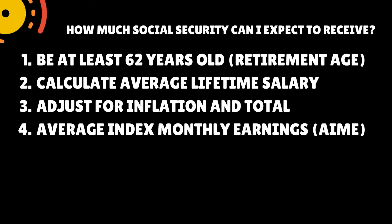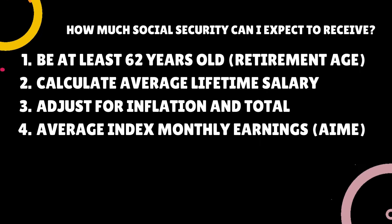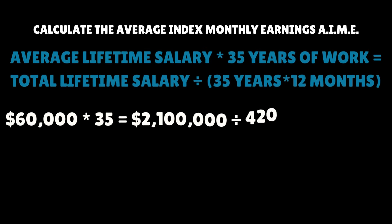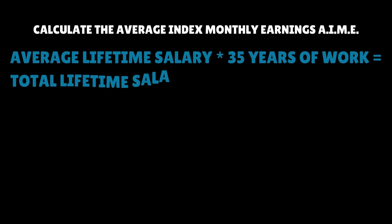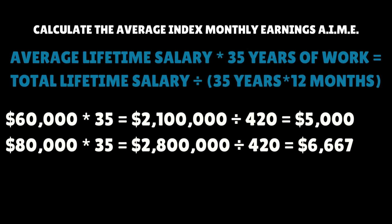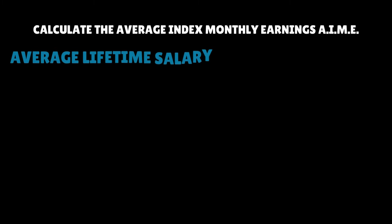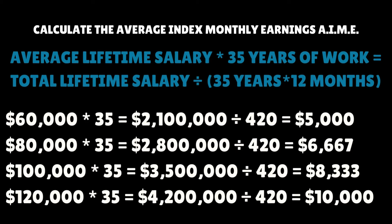The next step is to take the total amount we just calculated and create your Average Indexed Monthly Earnings — your AIME. You take the total amount and divide it by 420. The reason we use 420 is that we take 35 years multiplied by 12 months per year. So if you take $2.1 million divided by 420, that gives you an AIME of $5,000. The $2.8 million divided by 420 gives you an AIME of $6,667. The $3.5 million gives you $8,333, and the $4.2 million gives you a $10,000 AIME.